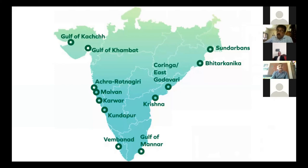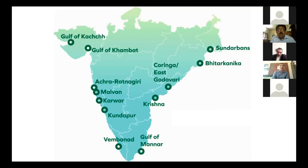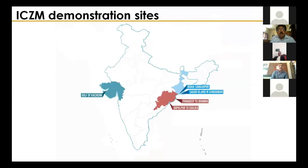Besides the CRZ 2019 ESA framework, there are 12 Critically Vulnerable Coastal Areas (CVCAs) — two in Andhra Pradesh, two in Maharashtra, two in Karnataka, along with others — mainly mangrove-inhabited areas but also including coral areas in the Gulf of Mannar and Gulf of Kutch. These areas require immediate attention and community participation. An integrated management plan for each CVCA will be prepared by NCSM with the state, planned for the second phase of funding from the World Bank.